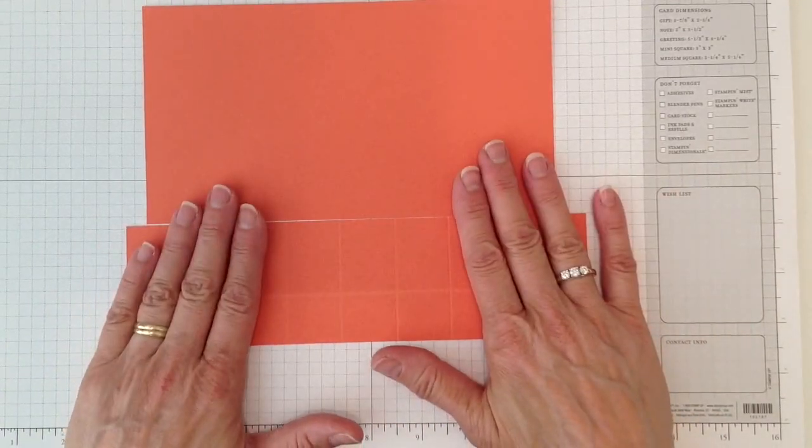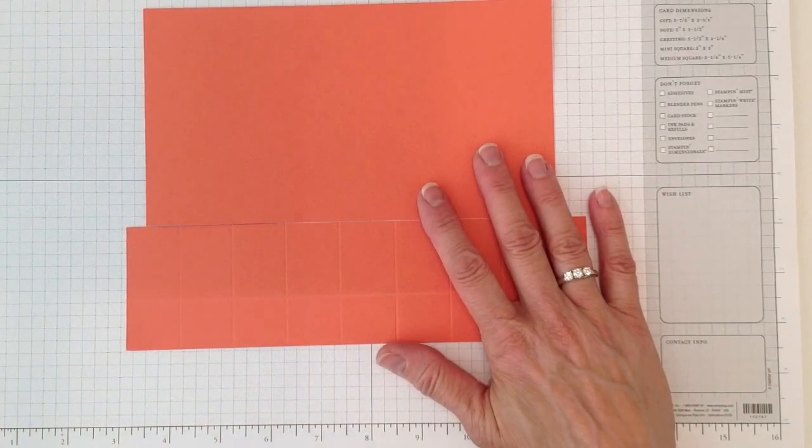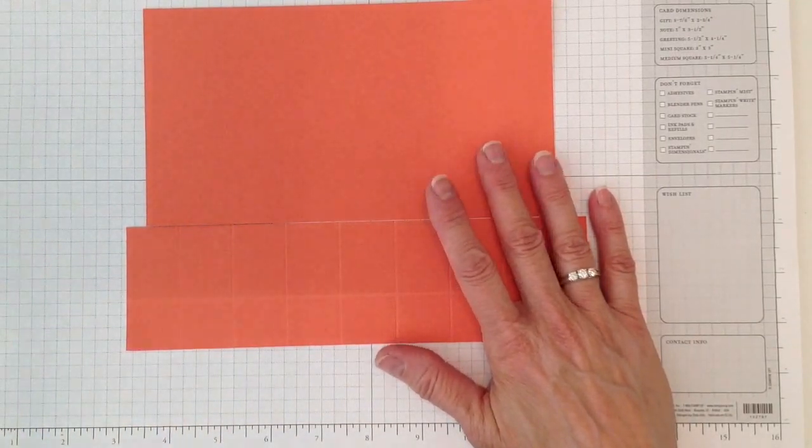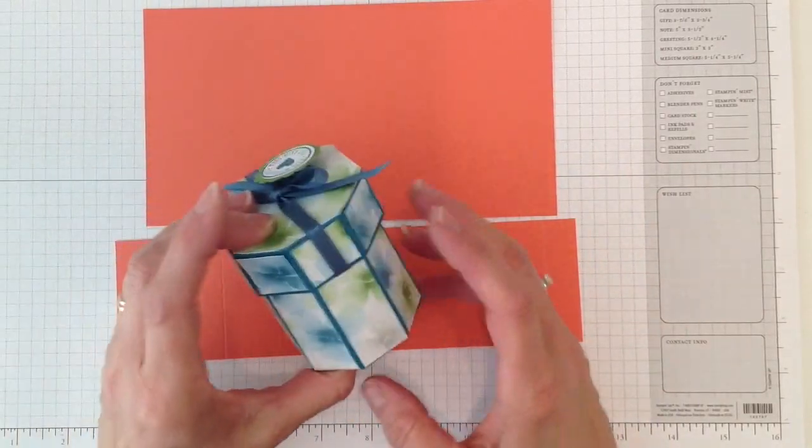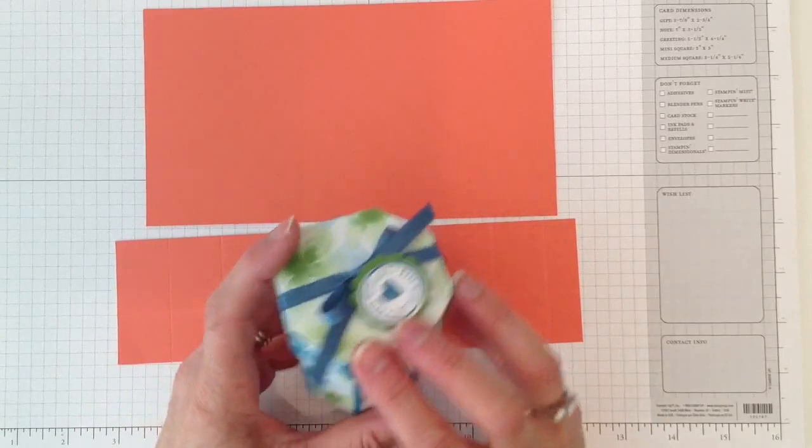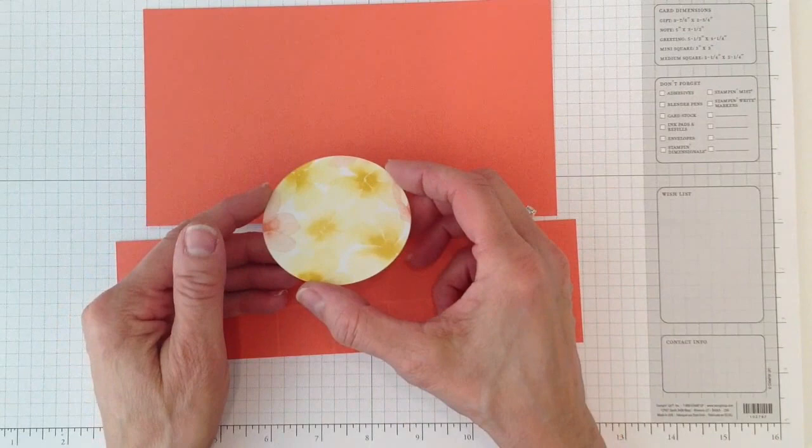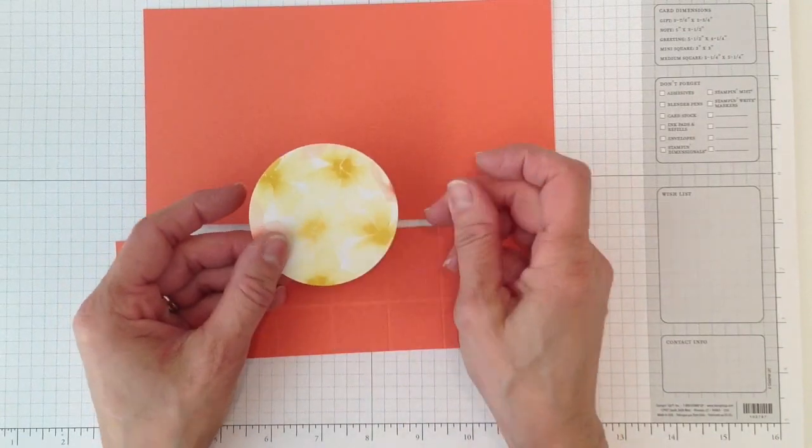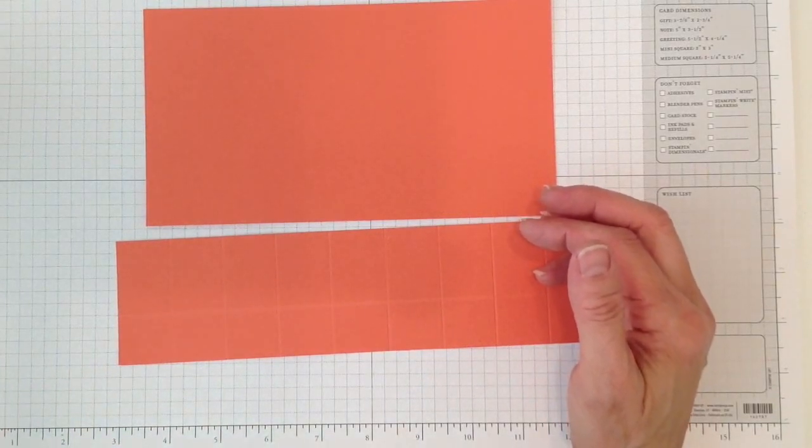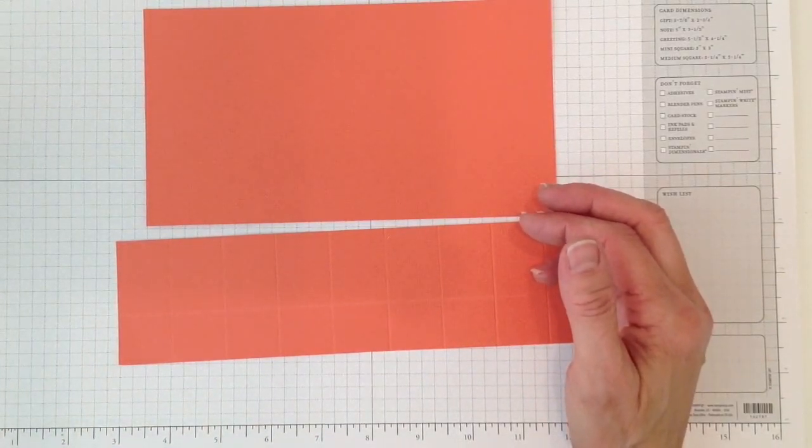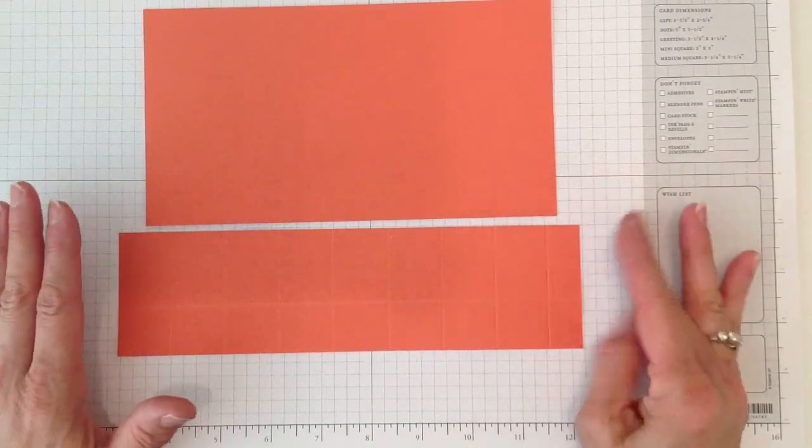And I'm using the new Watercolor Wonder Designer Series Paper, and I am so in love with it. This one is one of the patterns that's on there, and today I'm going to show you the same pattern but in a different color. It's this Tangerine Tango and Daffodil Delight, and I just love this new watercolor paper. I'm sure I'm going to be buying another pack because I love it so much. All of the designs are so pretty.